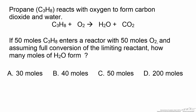You have chosen answer C, that we produce 50 moles of water. Since we have 50 moles of propane and 50 moles of O2, we see that it is a 1 to 1 stoichiometry to form water and CO2. We must produce 50 moles of water and 50 moles of CO2. Therefore, answer C would be 50 moles.